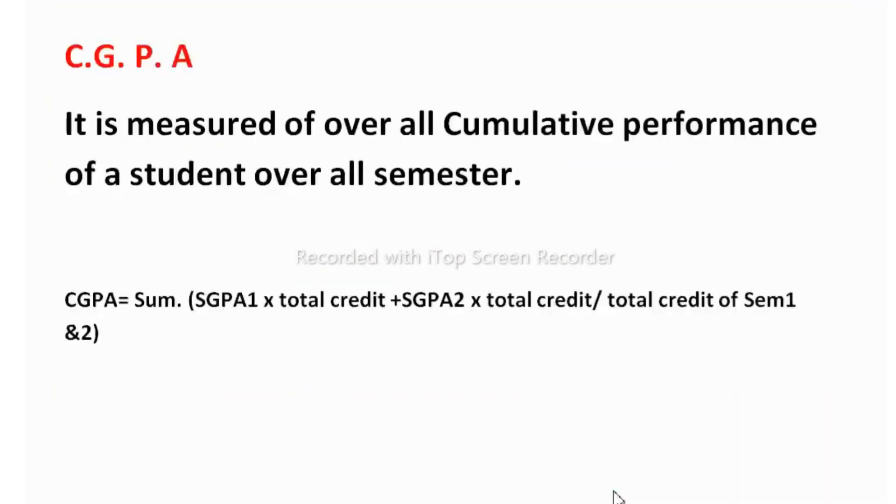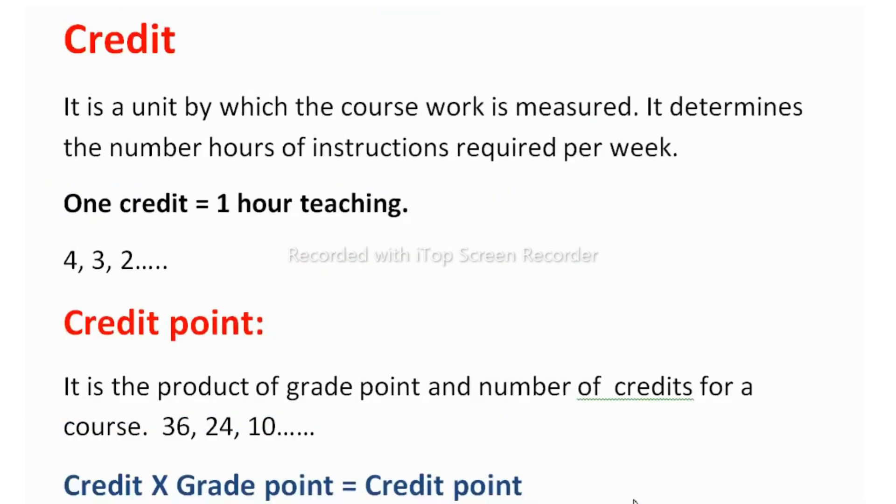Let's see the difference between credit and credit points. Credit is a unit by which the course work is measured. It determines the number hours of instructions required per week. For example, one credit equals to one hour teaching.